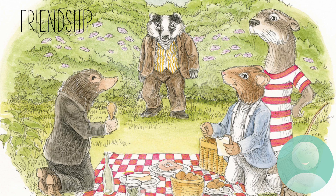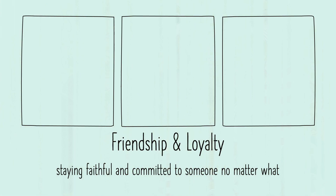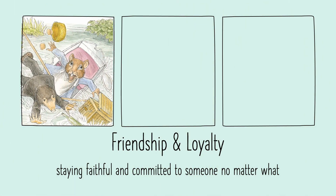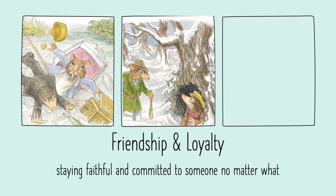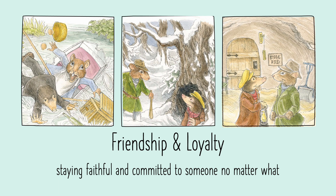Friendship and loyalty are easily recognizable themes in this story. When people are loyal, it means that they stay faithful and committed to someone, no matter what. We can see these in moments like when Water Rat saved Mole from drowning, or when Rat goes to find Mole when Mole goes missing in the wild wood. He even took Mole home when he was feeling homesick, even though the weather was getting bad and they were supposed to be going to Rat's home. Water Rat is a character that stands out when thinking about the themes of loyalty and friendship in this story.